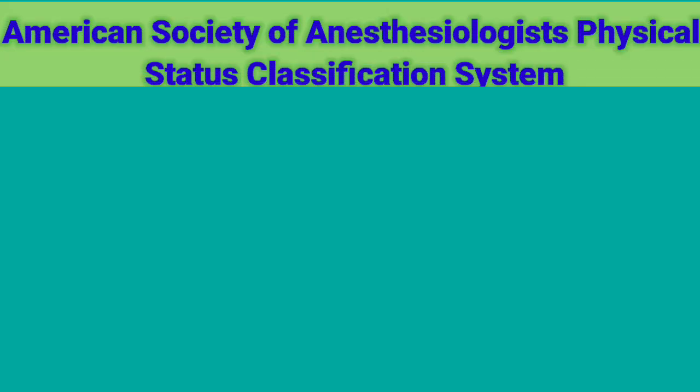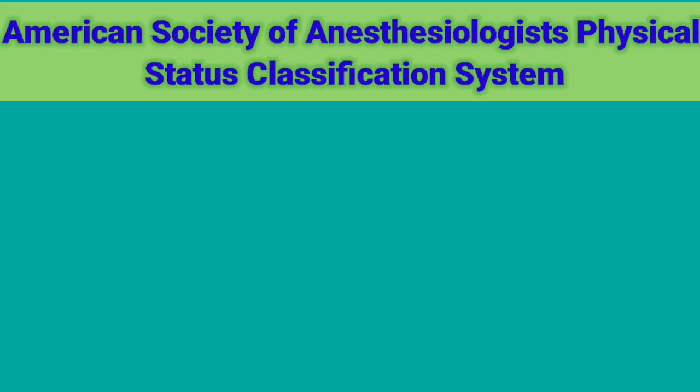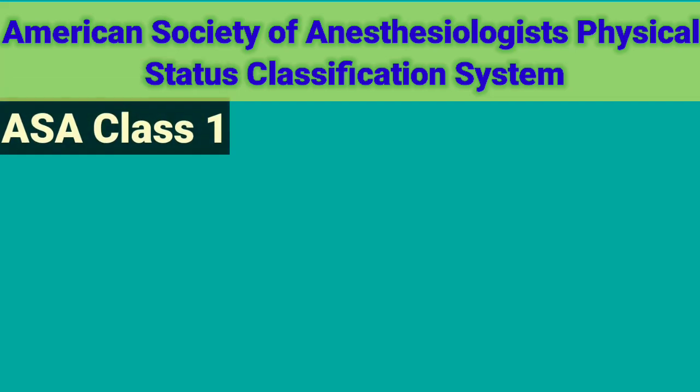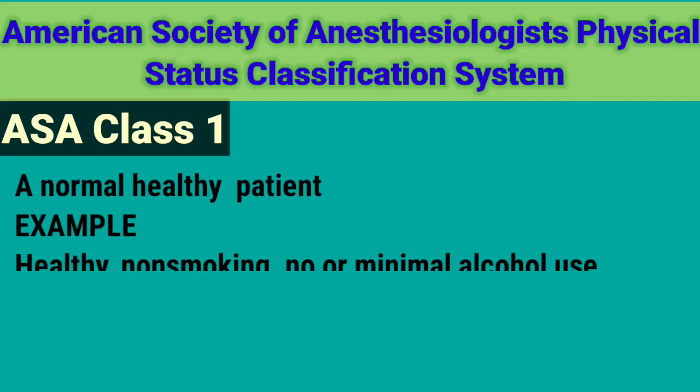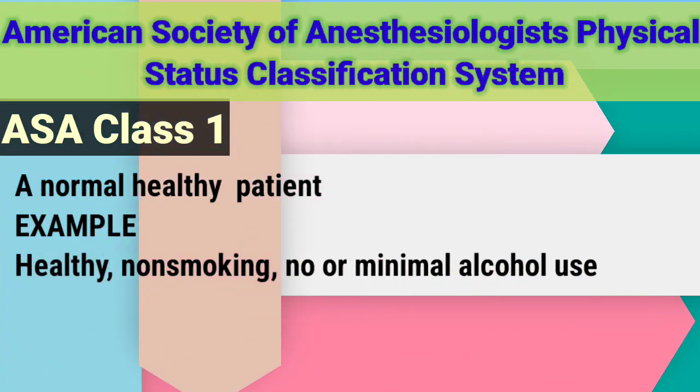American Society of Anesthesiologists physical status classification system: ASA Class 1 is a normal healthy patient. Example: healthy, non-smoking, with no or minimal alcohol use.